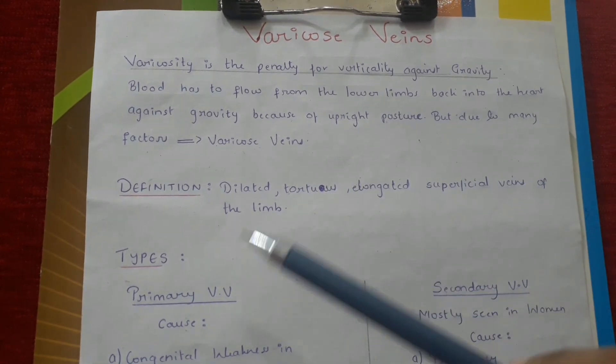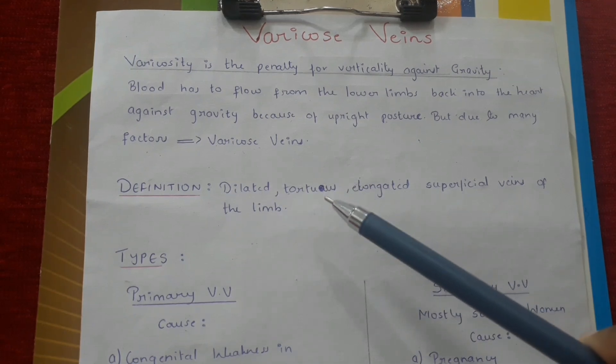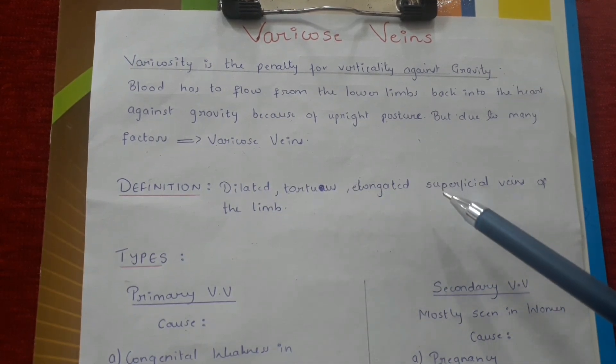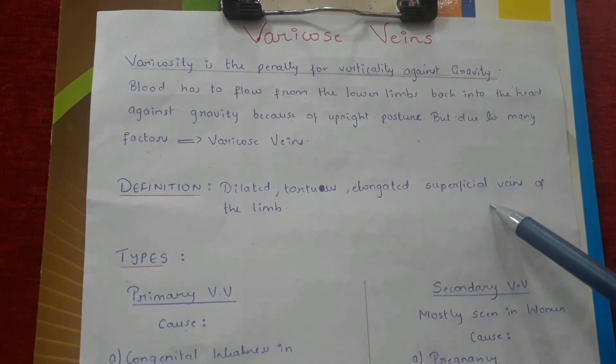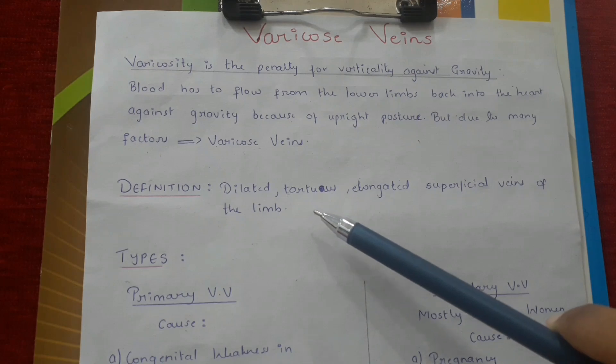Definition of varicose veins: varicose veins are dilated, tortuous, elongated superficial veins of the limb.